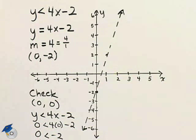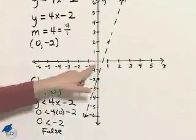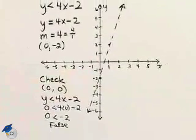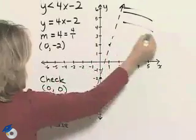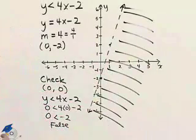No, that's not true. That's in fact a false statement. So therefore (0, 0) is not a part of the solution of this inequality. Therefore that tells us we are going to shade on this side of the boundary line.